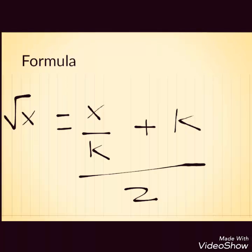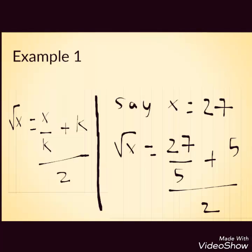Let's start with some examples. Say I have to find square root of 27. Here x is 27. The nearest perfect square root of 27 is 25 and square root of 25 is 5.